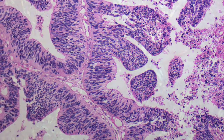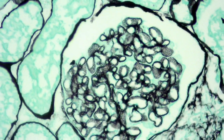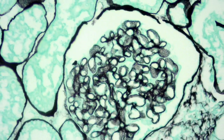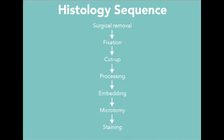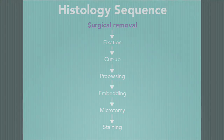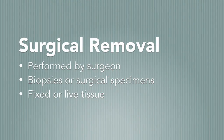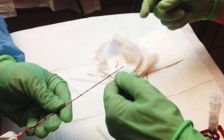Today we're going to take you through the sequence of preparing a sample for analysis under the microscope. Here is the histology sequence. Let's start with surgical removal. Surgical removal of tissue is normally carried out by a surgeon who submits biopsies or surgical specimens to the histopathology lab for a diagnosis.